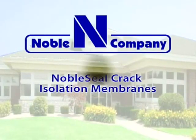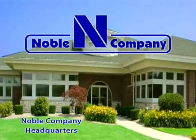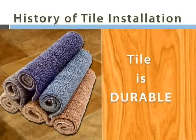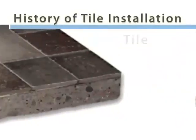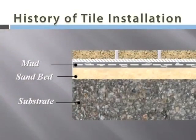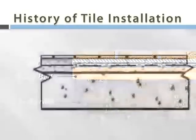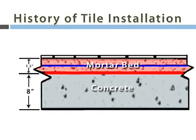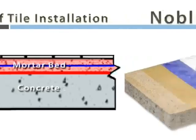Noble Seal crack isolation membranes. Tile is one of the most durable types of floor covering available — it easily outlasts carpet, vinyl, and hardwood. Some installations have lasted for centuries. The methods used in times past involved separating the tile surface from the subfloor or substrate. A thousand years ago, installers installed tile over a bed of sand. Mortar beds or sand layers separated tile from the substrate below and allowed for differences in movement.